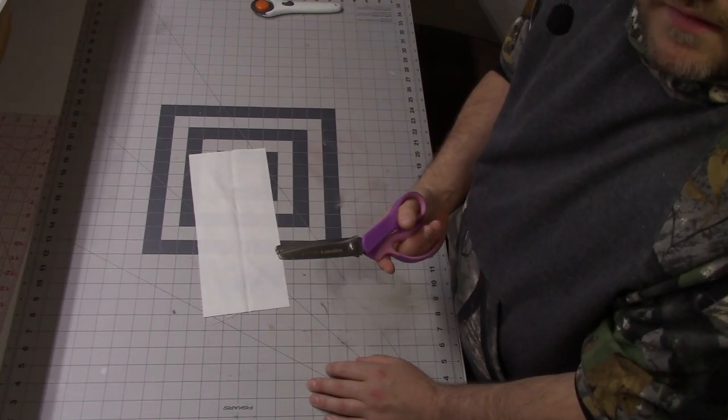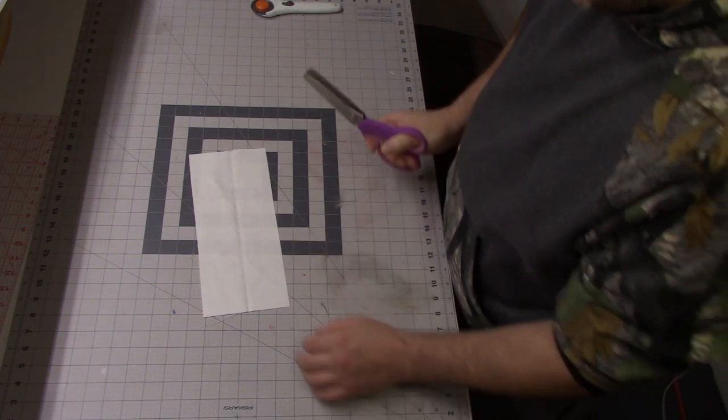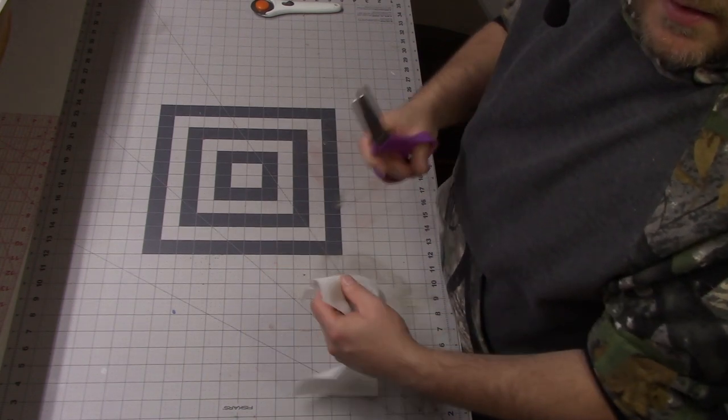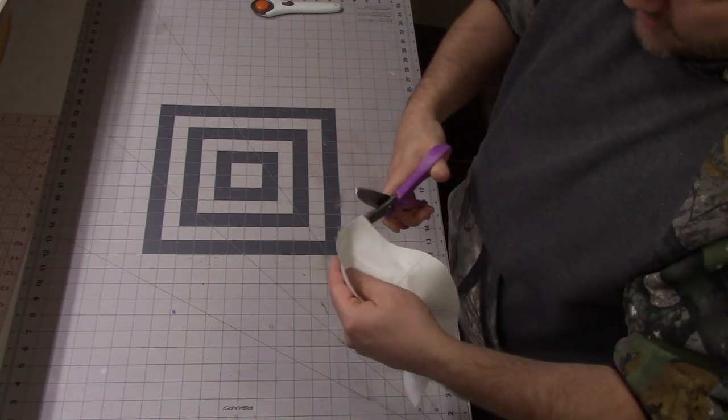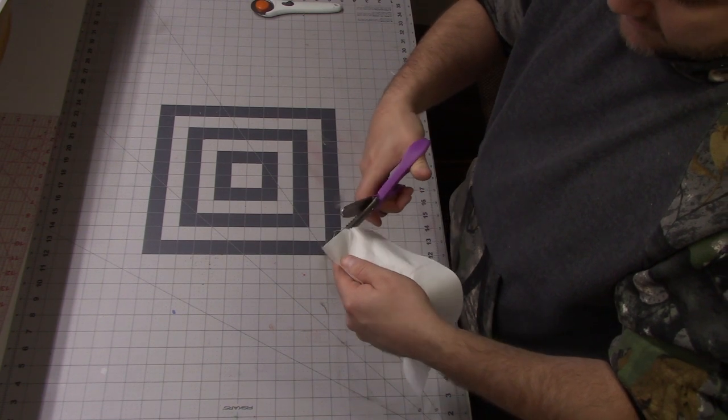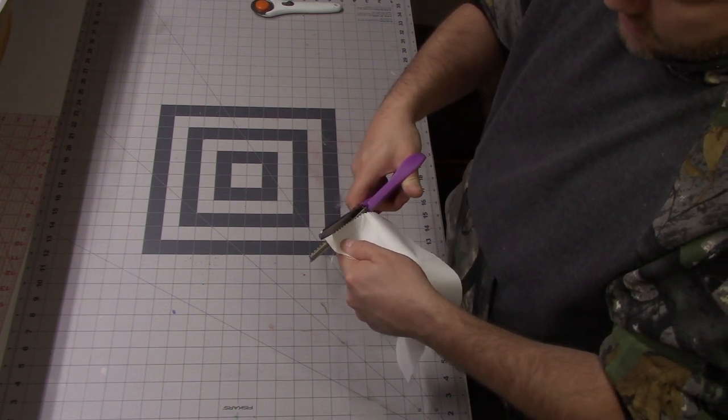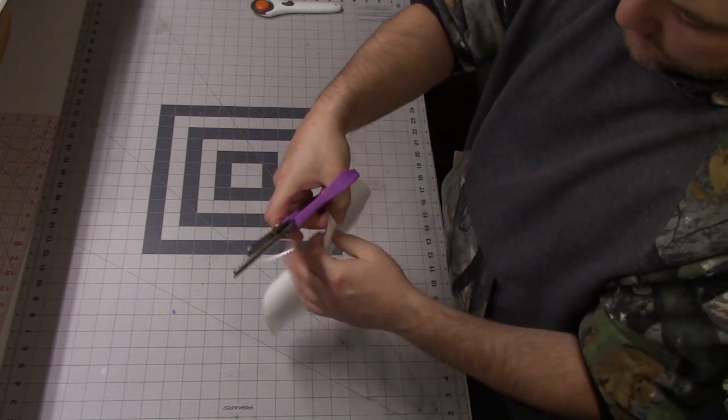I forgot to mention one part that makes these very simple and easy is pinking shears. So the first thing I'm going to do is take my fabric and my pinking shears and I'm going to pink the shorter edge, the five inch side. And I'm going to do that to both sides.